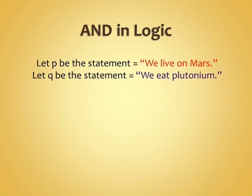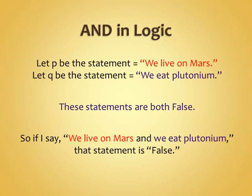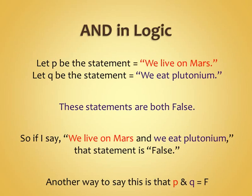Two wrongs don't make a right. If I say 'we live on Mars AND we eat plutonium,' it's still false. Just because I lied twice, that's not any better. So 'we live on Mars AND we eat plutonium' is still false. False AND false is false.